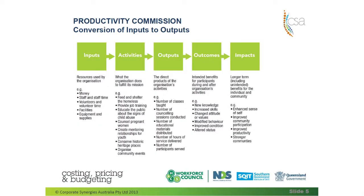If you now refer to slide 5, we're going to have a look at that model. The model shows that we range between inputs, activities, outputs, outcomes and impacts. In most of the situations we will face, our government funding allows for inputs for us to do activities and report back on the outputs. That is a traditional funding model that we have gone through over the past 10 to 15 years.